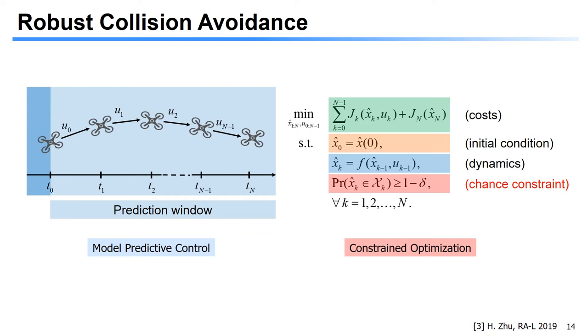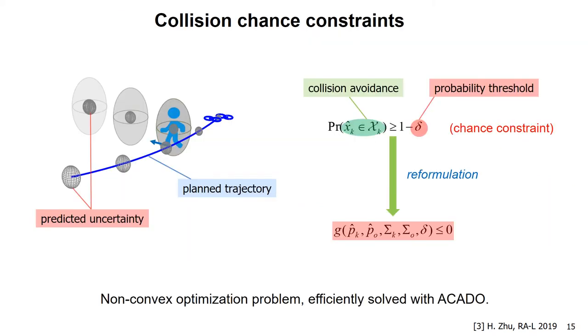To account for MAV localization and obstacle detection uncertainties, we formulate a chance-constrained model predictive controller based on our previous work. The chance-constraint is formulated to ensure the collision probability between the MAV and obstacles is below a specified threshold, which is generally intractable for optimization.